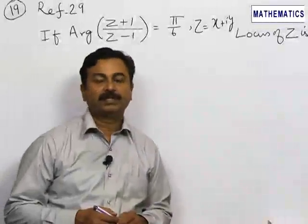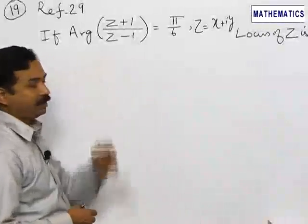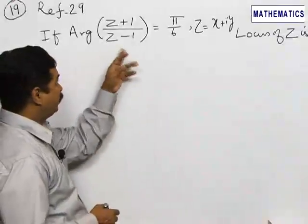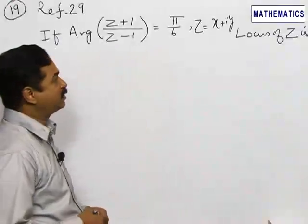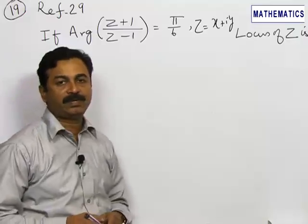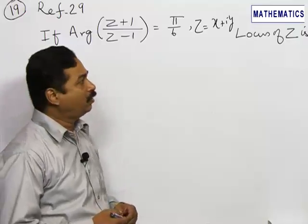Let us refer to question number 29. It is given that the argument of (z+1)/(z-1) is equal to π/6, where z = x+iy is a complex number. We have to find the locus of z.